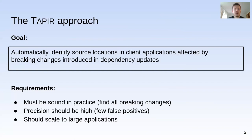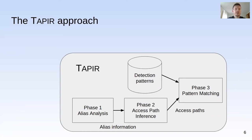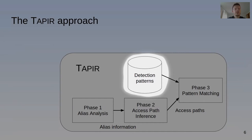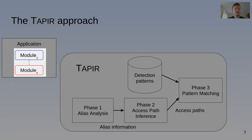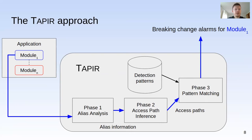Finally, it should also scale to large applications. Our solution is a program analysis technique implemented in a tool named Tapir. In addition to writing the changelog, the dependency developer describes the APIs affected by breaking changes as detection patterns using a novel pattern language. These detection patterns are kept by Tapir in an internal database. A Node.js application consists of a set of modules — every file in the program is a separate module — and each module is analyzed by Tapir in isolation. This ensures scalability since the running time of Tapir becomes linear in the number of modules.